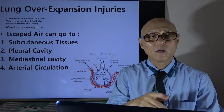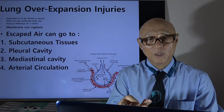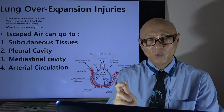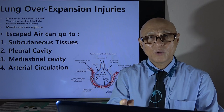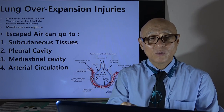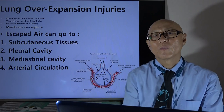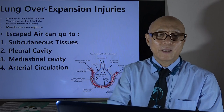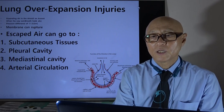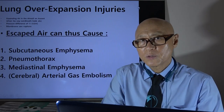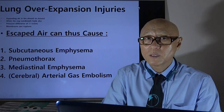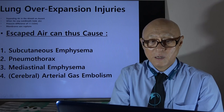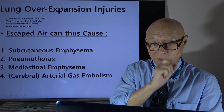The escaped air can go to the subcutaneous tissue, to the pleural cavity — the space between the two layers of pleura covering the lungs — to the mediastinal cavity where the heart is located, and into the arterial circulation. This gives you subcutaneous emphysema, pneumothorax, mediastinal emphysema, and arterial or cerebral arterial gas embolism.